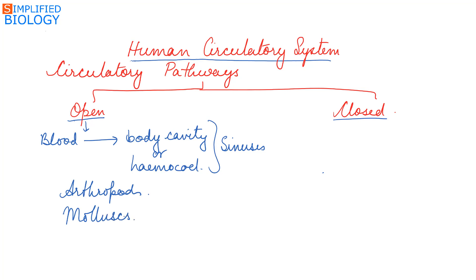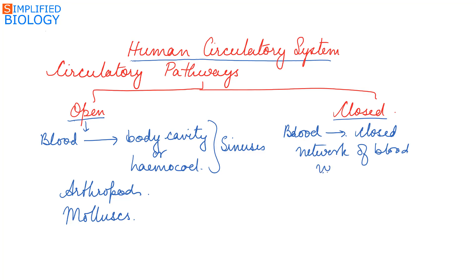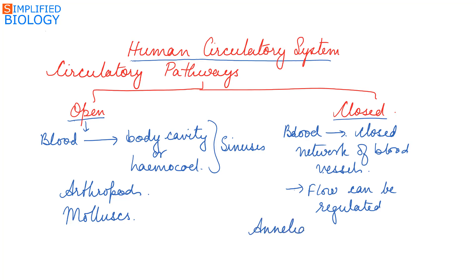In the open circulatory pathway, the flow of fluid cannot be regulated. The second type is the closed circulatory system, where blood from the heart is pumped and circulated through a closed network of blood vessels. As a result, the flow of fluid can be regulated. The closed circulatory system can be seen in annelids and in chordates.